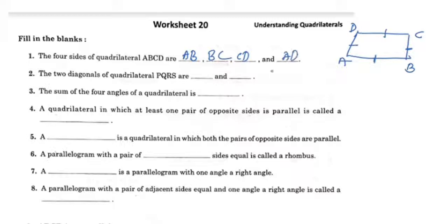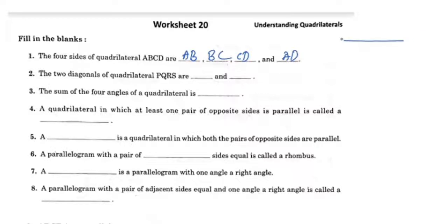The two diagonals of quadrilateral PQRS are PR and QS. Here I have a quadrilateral PQRS and its diagonals.